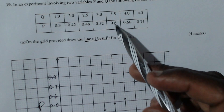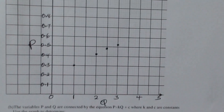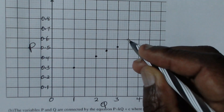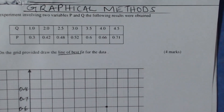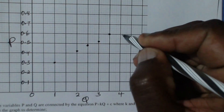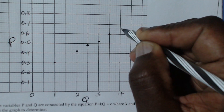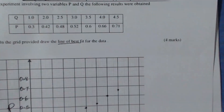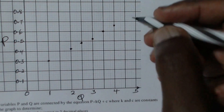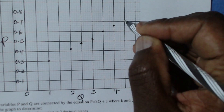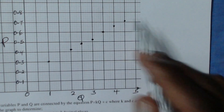Then (3.5, 0.6) — q equals 3.5 and p equals 0.6, plotted here. Next is (4.0, 0.66) — q equals 4.0 and p equals 0.66, plotted here. The last point is (4.5, 0.71) — q equals 4.5 and p equals 0.71, placed here.